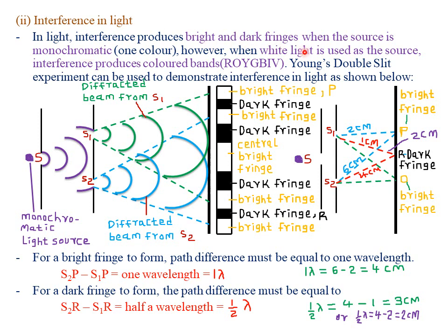However, when white light is used as the source of light, interference is going to produce what we call colored bands. For example, when we use white light, we know that after diffraction we are going to have the seven colors of the spectrum, which are red, orange, yellow, green, blue, indigo, and violet, as we saw in refraction of light. You can review our lessons on refraction of light, which was our second topic under Form 3 work.